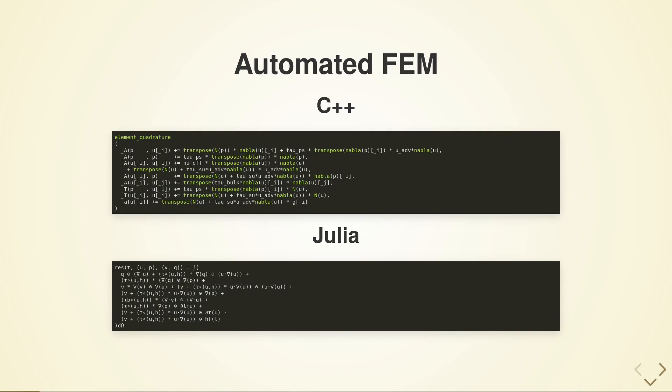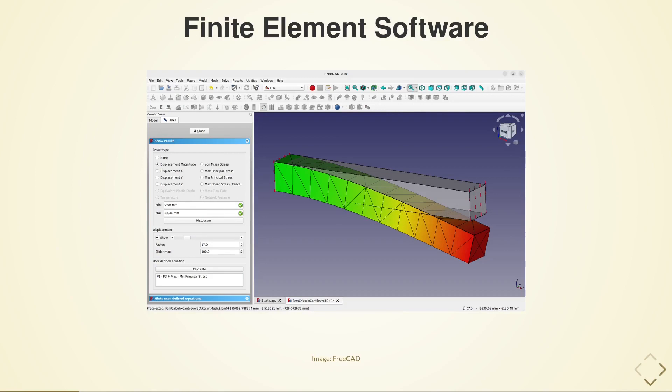The objective of this kind of automation is to be able to write very concise code that is similar to the mathematical formulation of the problem. For example, on this slide there is a core of the code to solve Navier-Stokes equations for fluid dynamics, both in C++ at the top and in Julia.